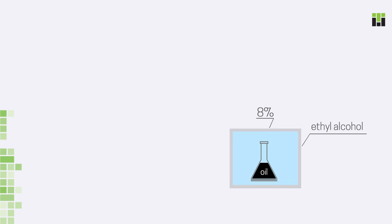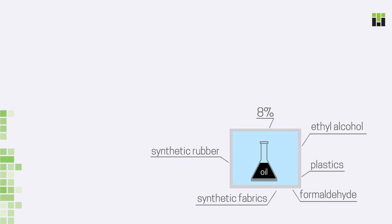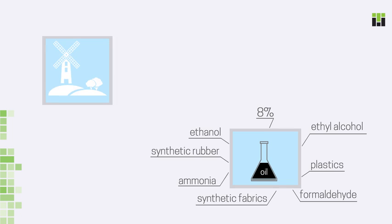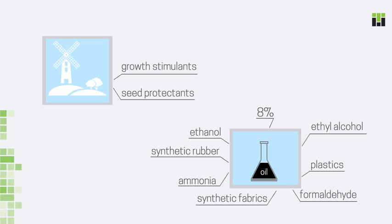Chemical industry makes use of formaldehyde plastics, synthetic fabrics, synthetic rubber, ammonia, etc. Petroleum products are used in agriculture as well — including plant growth stimulants, seed protectants, fertilizers, and plastics for hotbeds.